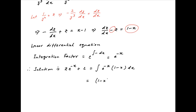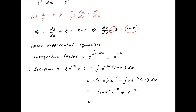Integrating by parts, the integral on the right-hand side is written as (1 minus x) times the integral of e^(−x) minus the integral of minus e^(−x) times the derivative of (1 minus x), which is negative one dx. This simplifies to minus (1 minus x) times e^(−x) plus e^(−x), which equals minus e^(−x) plus x·e^(−x) plus e^(−x), simplifying to x times e^(−x).